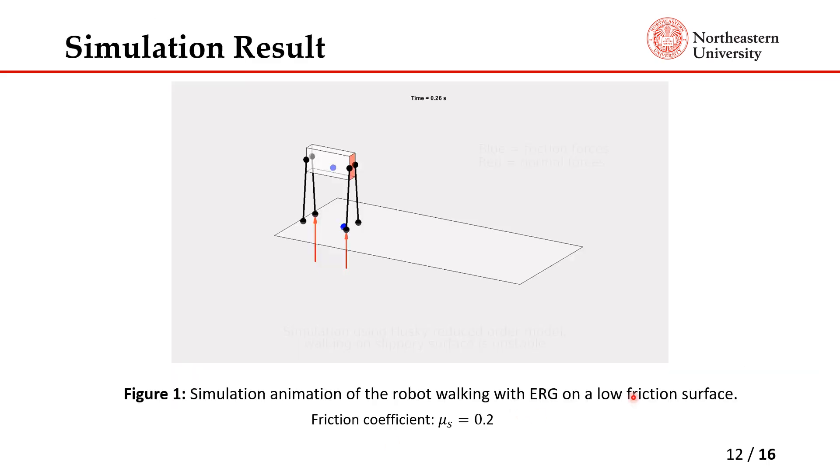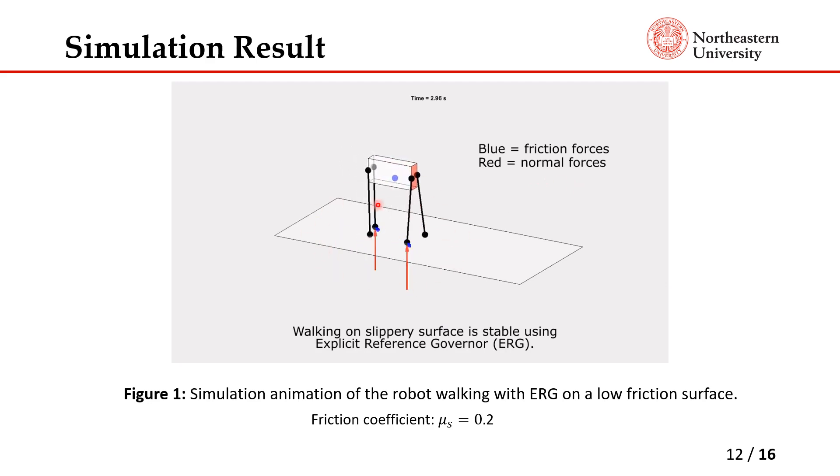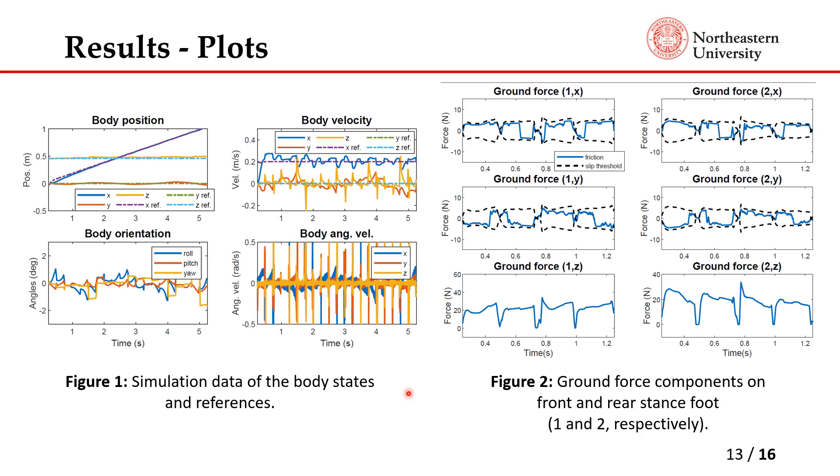This is an animation of the robot walking on a slippery surface. First is without ERG; as you can see it failed almost immediately. And then this is the simulation with the ERG active. We satisfied the friction constraint from this ground forces. Red is normal and blue is friction forces. In doing so, we were able to have the robot walk on top of a very slippery surface with a static friction coefficient of just 0.2. Here is some plot of the simulation states. We have the body position with some reference that it's simply tracking here. As you can see, it tracks the body position pretty well. The velocity shown here also shows it's steady and consistent for walking speed. The ground force follows within the slip threshold as you can see here, and the ground forces is positive almost all the time.